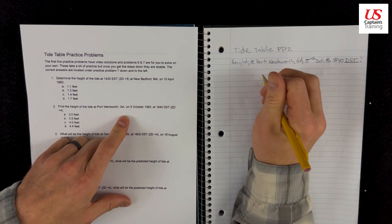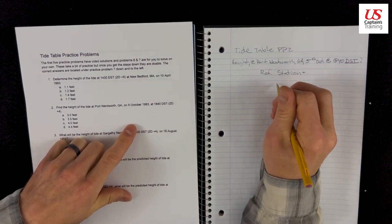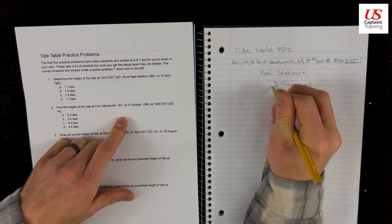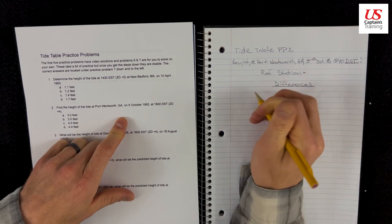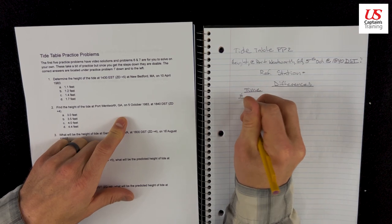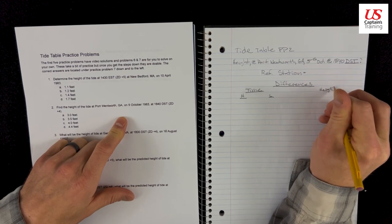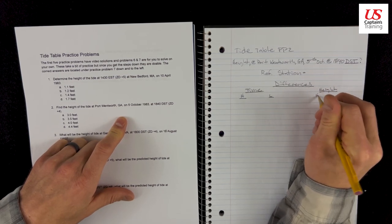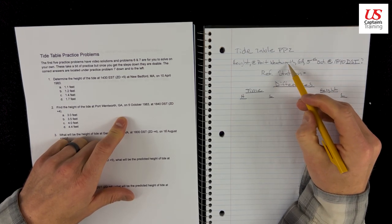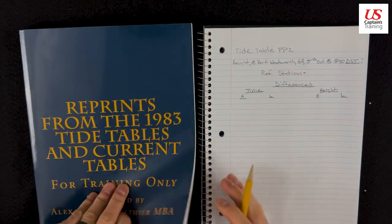Let's set this up. We know we're going to need the reference station. What's the reference station? And then we are going to get the differences from table two. Actually going to get the reference station from table two as well. So the differences, there's differences in time of the high and time of the low and then differences in the height of the high and of the low tide between the reference station and Port Wentworth, GA. So now we have the information from the problem. We can jump into our tide tables.